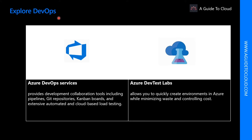Azure DevOps brings together people, process, and technology. Azure DevOps services allow you to create build and release pipelines that provide continuous integration, delivery, and deployment for your applications. You can integrate repositories and application tests, perform application monitoring, work with build artifacts, backlog items for tracking, automate infrastructure deployment, and integrate third-party tools and services such as Jenkins and Chef.